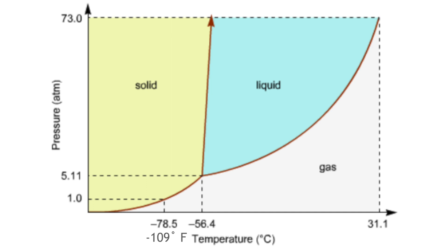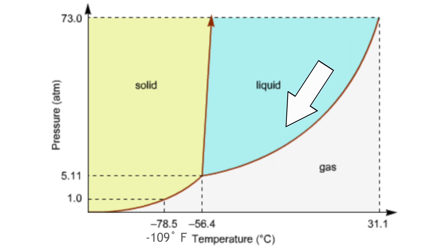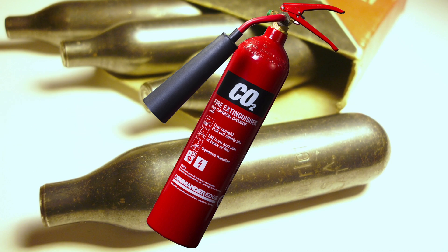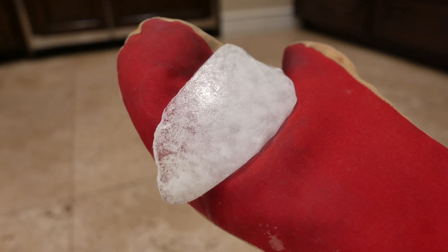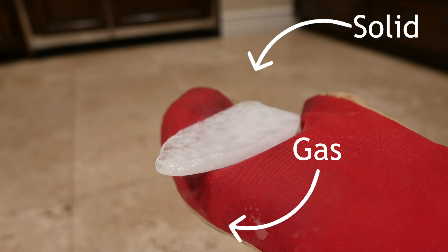At standard pressure, carbon dioxide goes straight from being a solid to a gas at negative 109 degrees Fahrenheit. But if the pressure is above about 5.1 atm in this range of temperatures, the molecules get warm enough to break out of their rigid crystalline structure, but the pressure is high enough to force them together into a liquid phase. So you can have liquid CO2 in CO2 cartridges or in a CO2 fire extinguisher. But under standard pressure, you can't have liquid CO2.